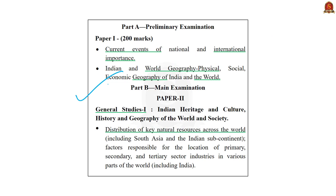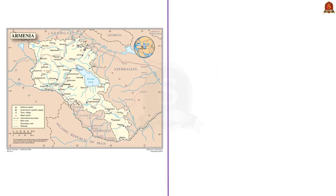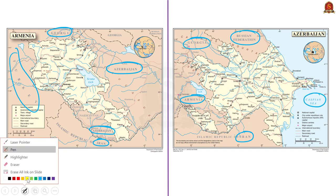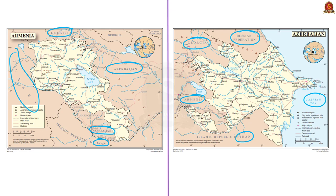As seen on the map, Armenia is a landlocked country surrounded by Georgia in the north, Azerbaijan in the east and southwest, Iran in the south, and Turkey in the west. Azerbaijan is not contiguous — its main territory is surrounded by Iran in the south, Armenia in the west, Georgia in the northwest, Russia in the north, and the Caspian Sea in the east. The territory called Nakhchivan is surrounded by Armenia in the east and north, Iran in the south and west, and Turkey in the northeast. Turkey, Iran, and Georgia are the common neighbors of both Armenia and Azerbaijan.